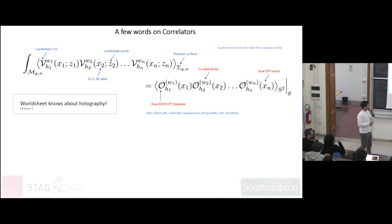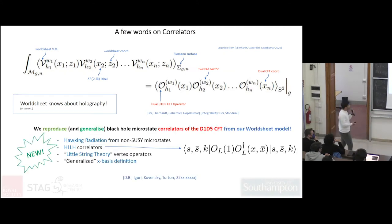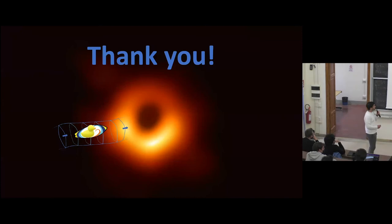This is done in AdS3 × S3. Actually, this equation works in the tensionless limit as been told by this paper here. But the point is that you can do much more - you can actually prove that the worldsheet knows about holography in these more complicated and general backgrounds, not only for AdS3 × S3. What we're going to show is that we produce some Hawking radiation from non-supersymmetric microstates. We compute the so-called heavy-light-light-heavy correlators. If you want, I can tell you more in the poster session. We have constructed something which should contain some information about little string theory, and lastly we have a generalization of the so-called x-basis - it's a bit more technical - that includes the definition of x-basis in these models. Thank you for your attention.